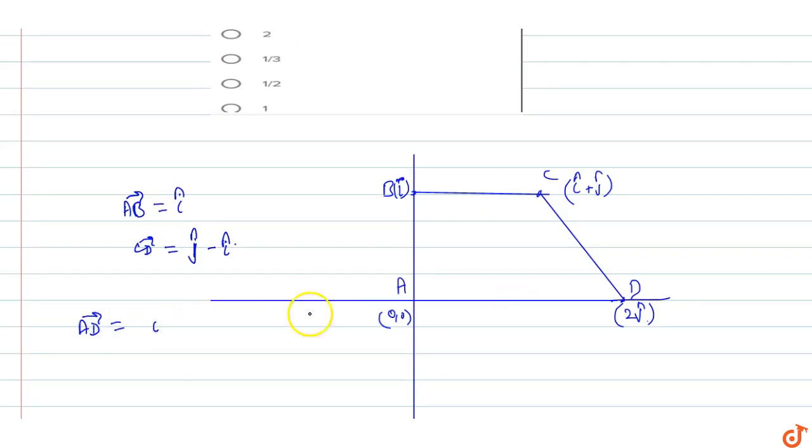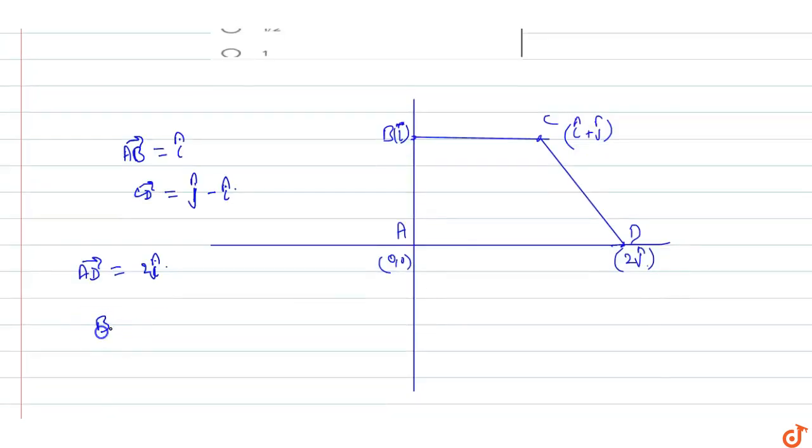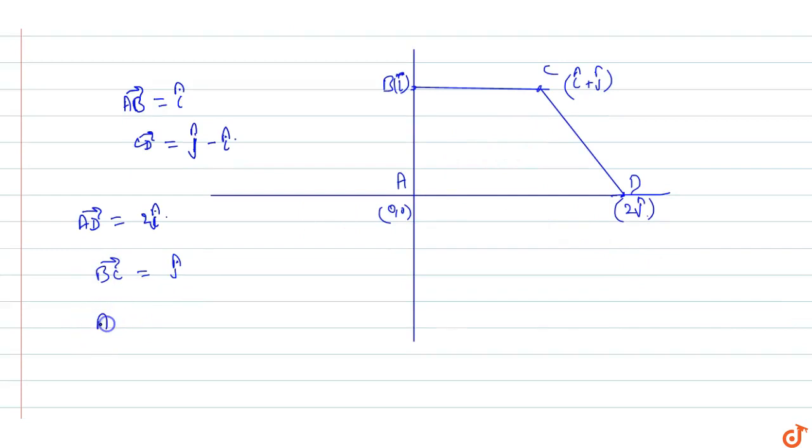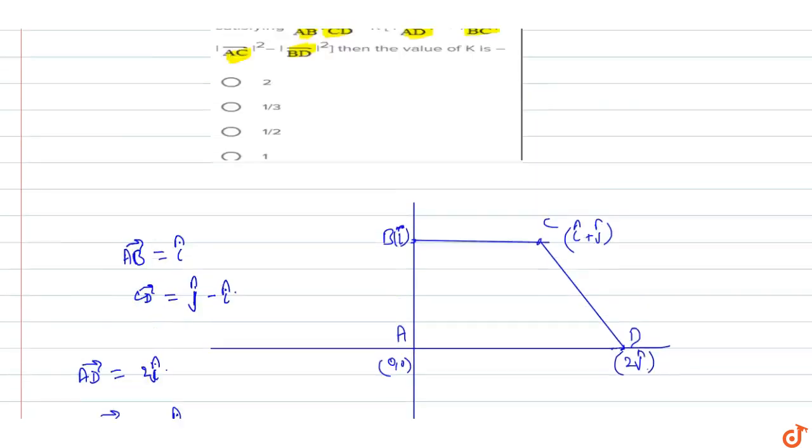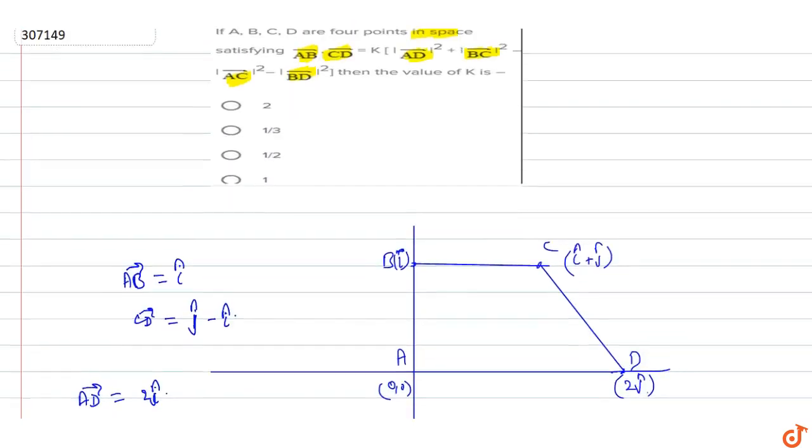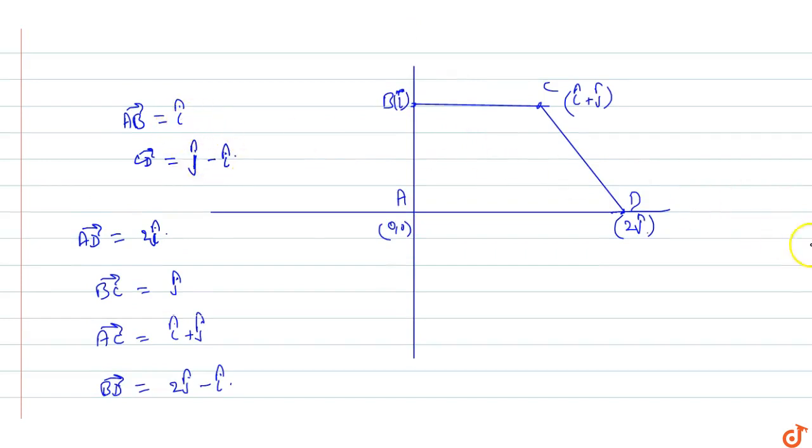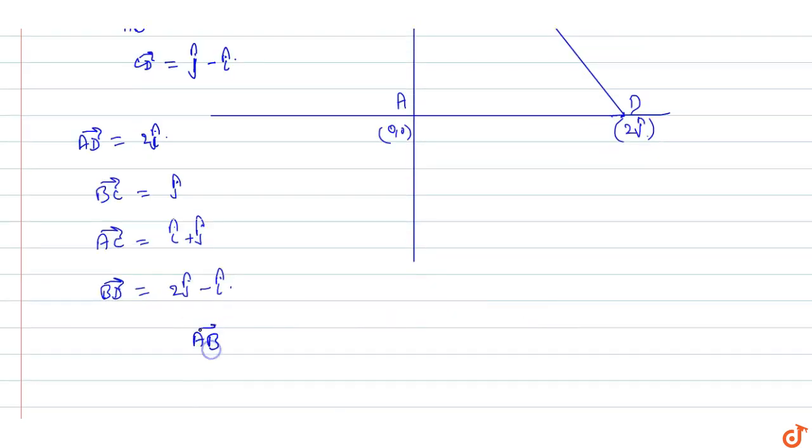AD vector is equal to 2j cap. BC vector is equal to i cap plus j cap. And BD vector is equal to 2j cap minus i cap.